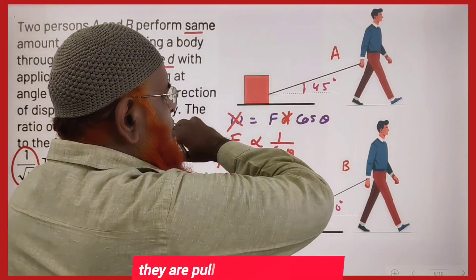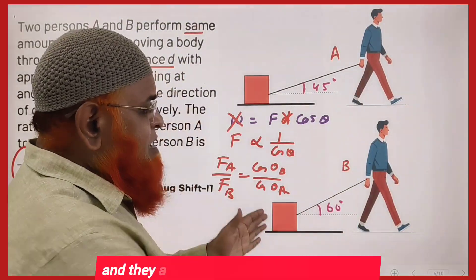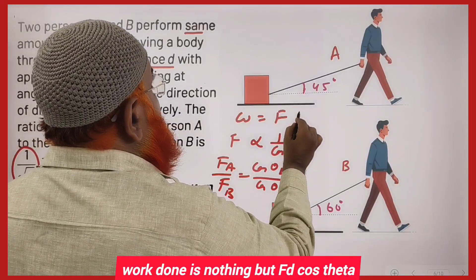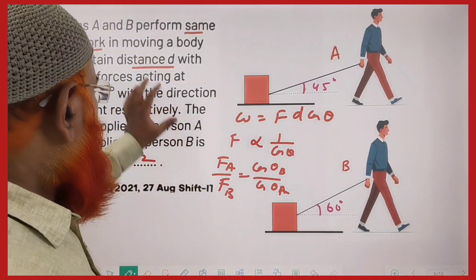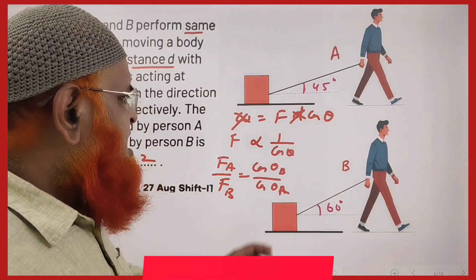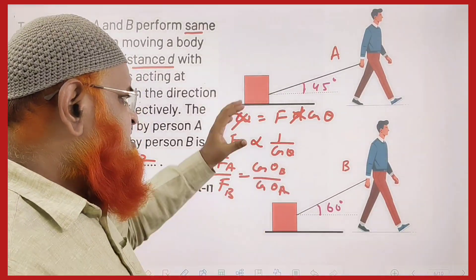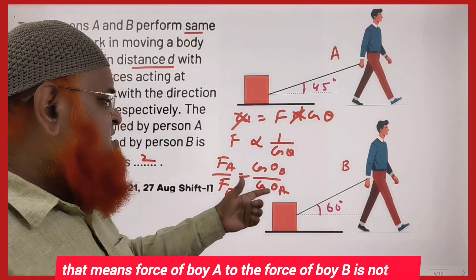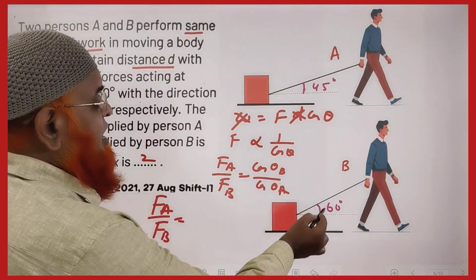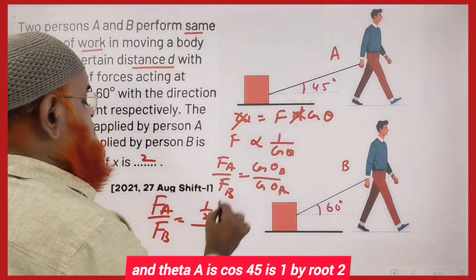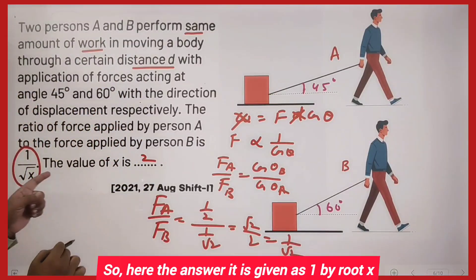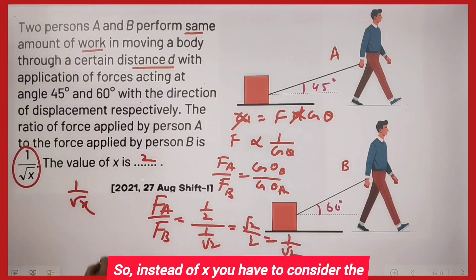Next problem: Boy A and Boy B are pulling the same block the same displacement but at different angles, doing the same work. Work done = F·d·cosθ. Since work and displacement are the same for both, force is inversely proportional to cosθ. So F_A/F_B = cosθ_B / cosθ_A = cos60° / cos45° = (1/2) / (1/√2) = 1/√2. Since the answer is given as 1/√x, x = 2.